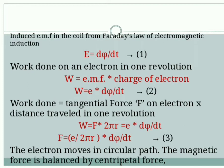In order to get the Betatron condition, I have started the derivation from Faraday's law. Induced EMF is equivalent to the change of flux, so E equals dΦ/dt, which is equation 1. Work done on an electron in one revolution can be written as W equals EMF times charge of electron, so E times dΦ/dt. Work done equals tangential force on electron times distance traveled in one revolution, so W equals F times 2πR, which equals E times dΦ/dt. From that, F can be written as E/(2πR) times dΦ/dt.